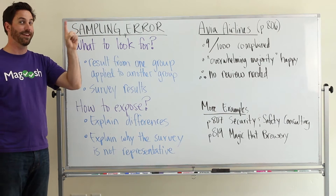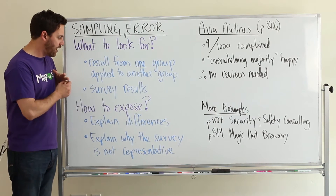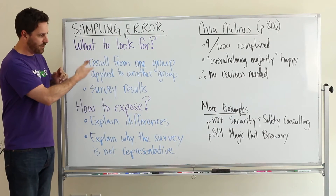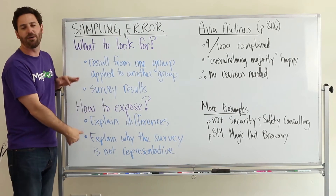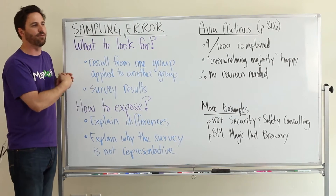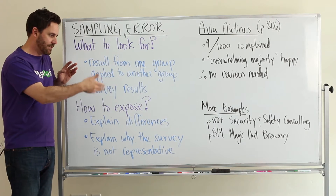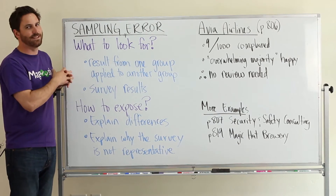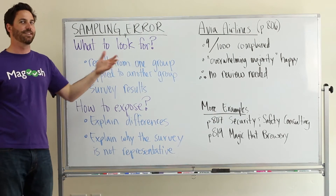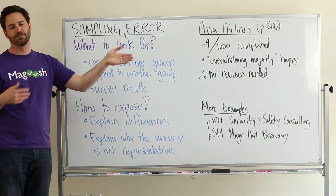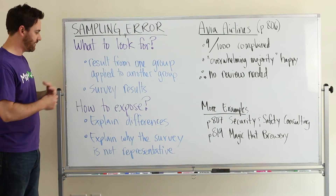How do you expose these errors? Well, first off, if there's different groups, different organizations, or different businesses, you'd want to talk about why they're different and how they're different, and why the results that one business saw don't necessarily transfer. Just because you're both businesses doesn't mean you're going to see the same result — there are lots of things that are different between businesses.